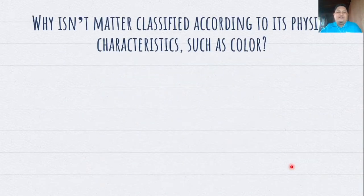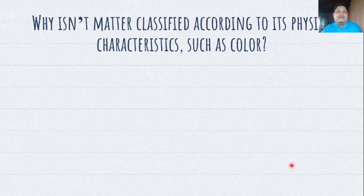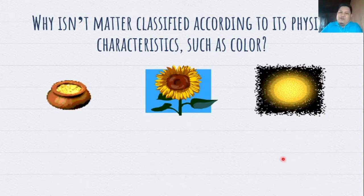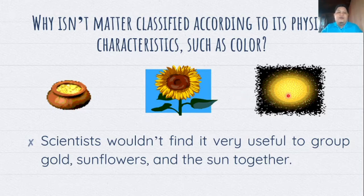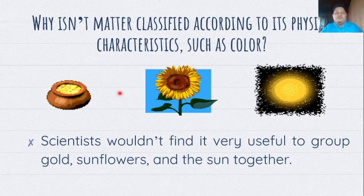Another question: why isn't matter classified according to its physical characteristics or properties, such as color? Last time we identified the different physical properties of matter such as luster, ductility, malleability, etc. So why isn't it a good idea to classify them according to their physical properties? What can you observe on these three forms of matter? We have here a piece of gold, a sunflower, and the sun. We cannot classify them according to their physical properties, since it is not very useful. Scientists wouldn't find it useful to group gold, sunflowers, and the sun together just by looking at their color, because these materials have their own specific properties that we need to consider.